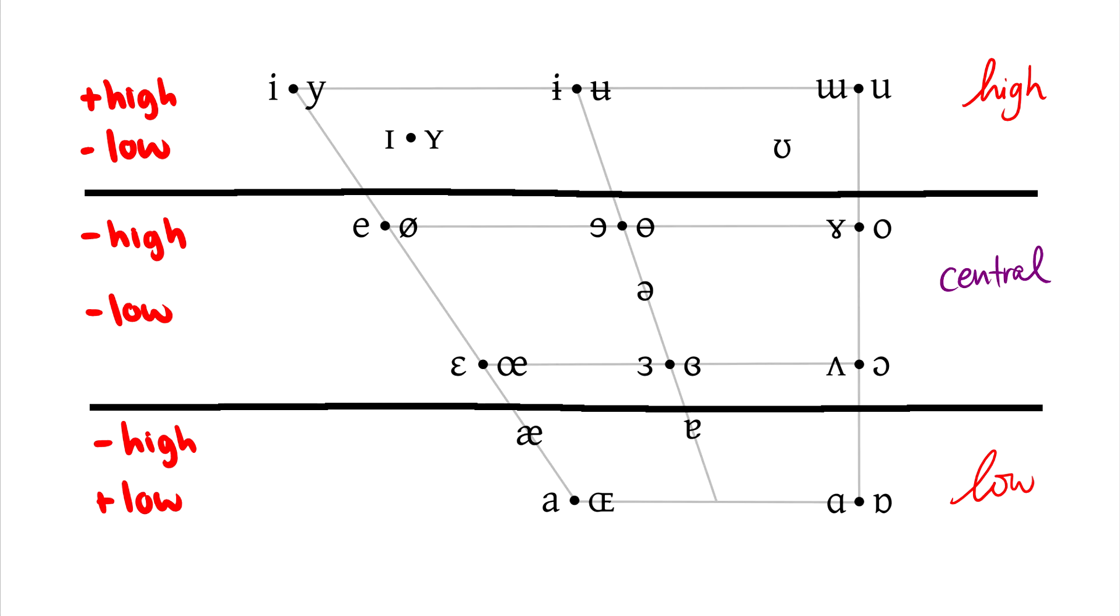Diphthongs like eh, the schwa uh, the uh or or in Brooklyn speech, or the lax eh as in bet, these are minus high minus low. So using the high and low features we can get at the height of a vowel.